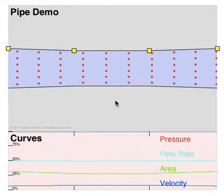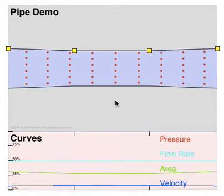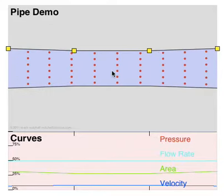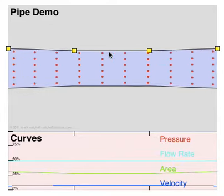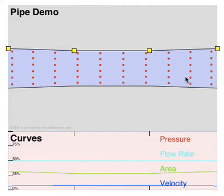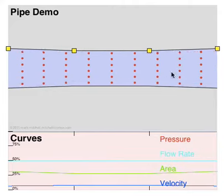Here we have something called a pipe demo for Bernoulli's effect. As we talked about before, static pressure is the pressure that the liquid pushes outward. And then we have velocity pressure that pushes forward during the current.